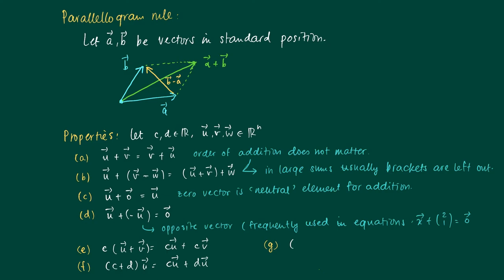So g is a property that actually if we have the product of two numbers times a vector u, it's the same as c times the scalar product du.